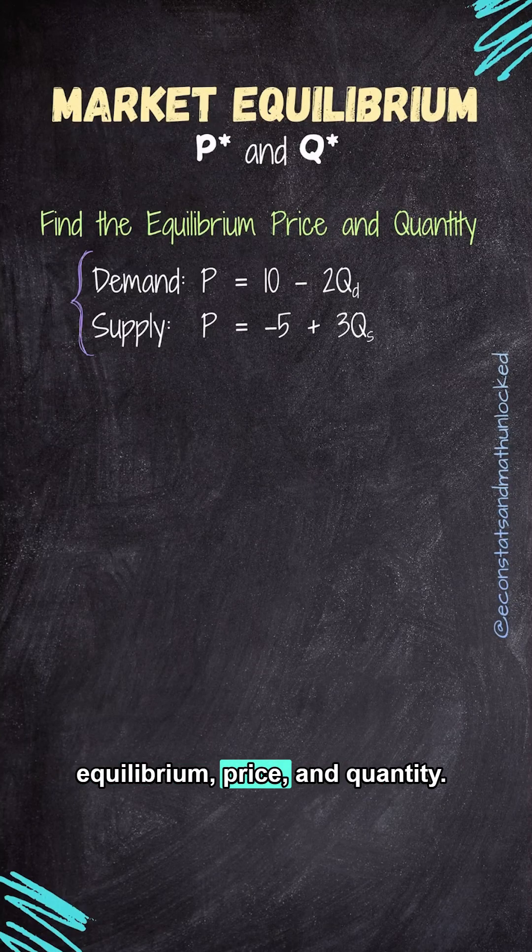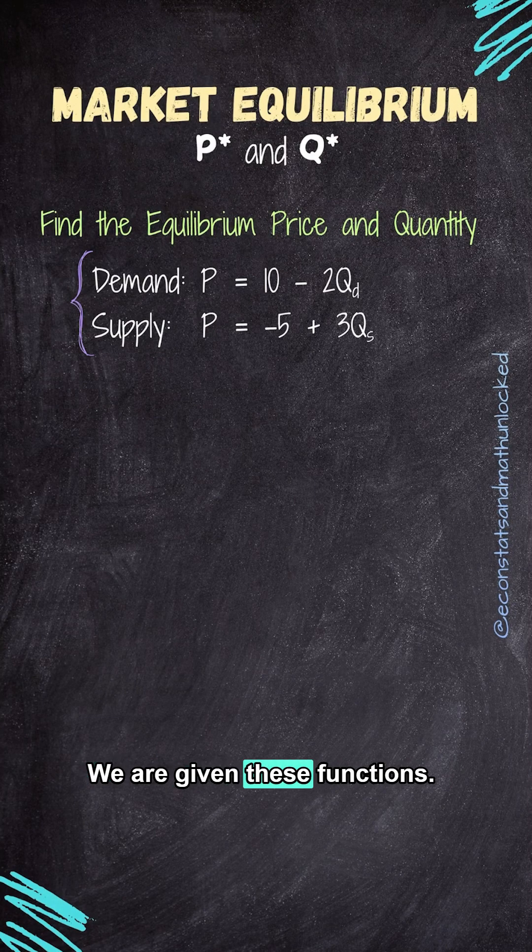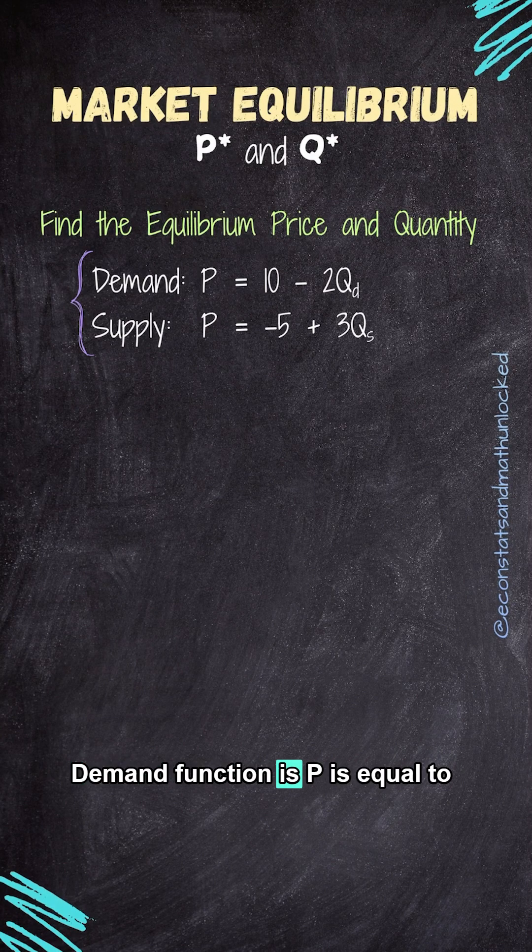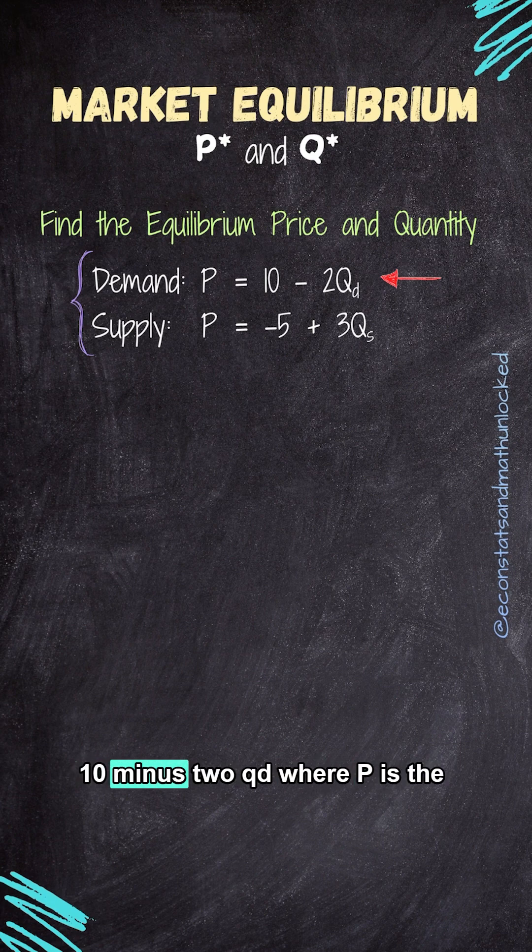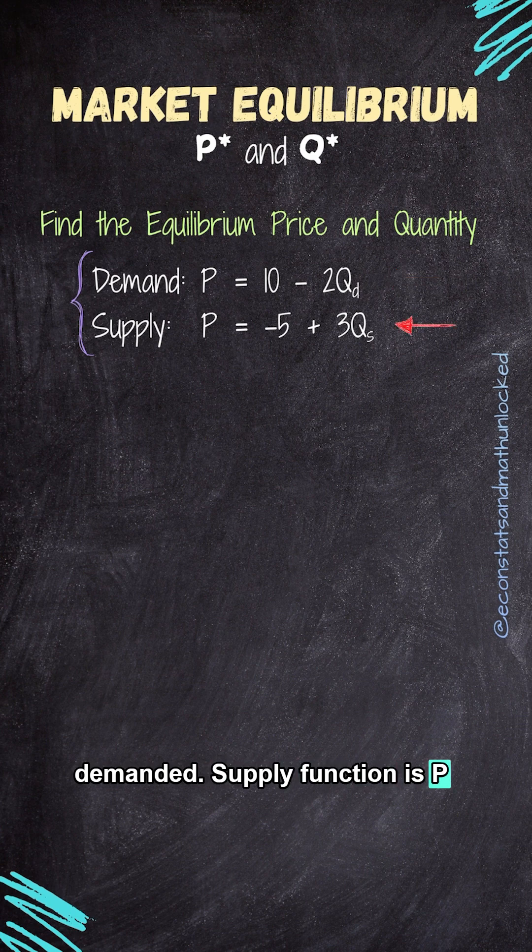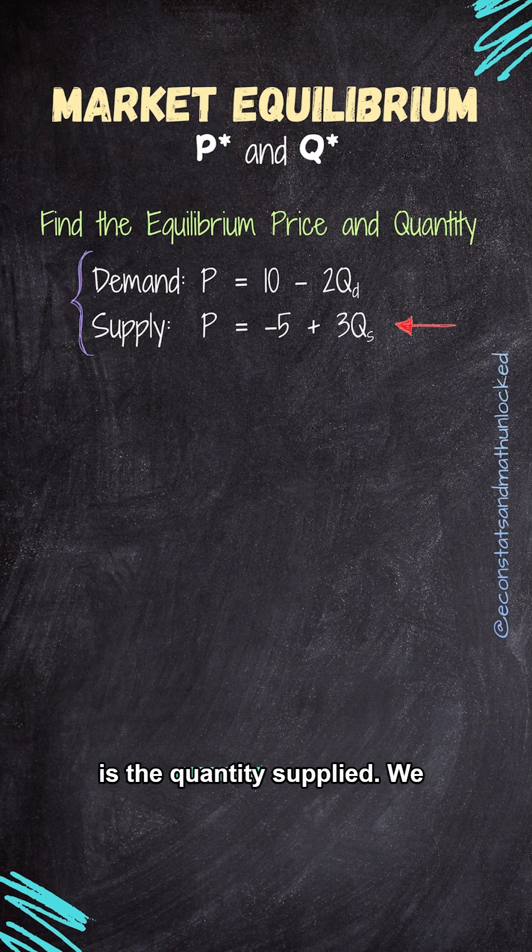Let's calculate the market equilibrium price and quantity. We are given these functions. Demand function is P equals 10 minus 2QD, where P is the price and QD is the quantity demanded. Supply function is P equal to minus 5 plus 3QS, where P is the price and QS is the quantity supplied.